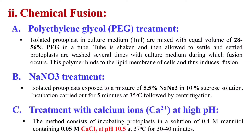The next chemical is calcium ions at high pH — we can also induce fusion by using Ca²⁺ ions at high pH. In this method, protoplasts are incubated in a solution of 0.4 molar mannitol which also contains 0.05 molar calcium chloride, and the pH of that solution is 10.5. The protoplasts are incubated at 37°C for 30 to 40 minutes, during which fusion takes place.